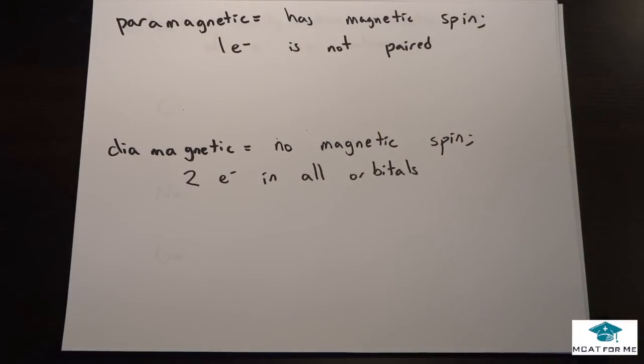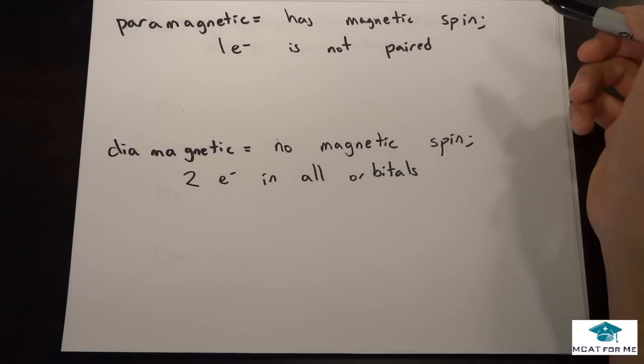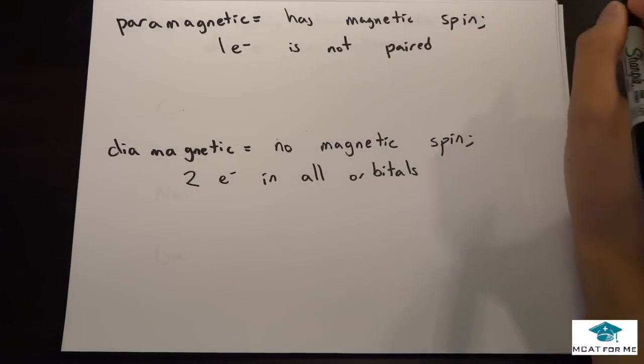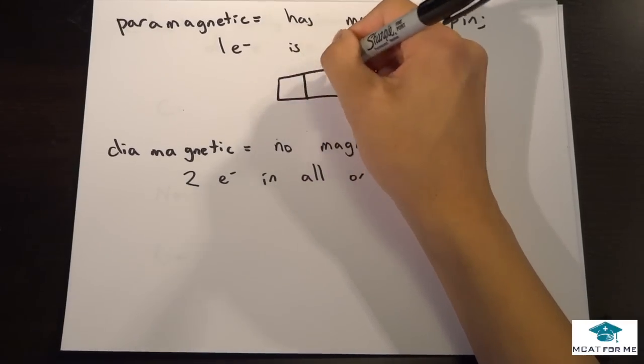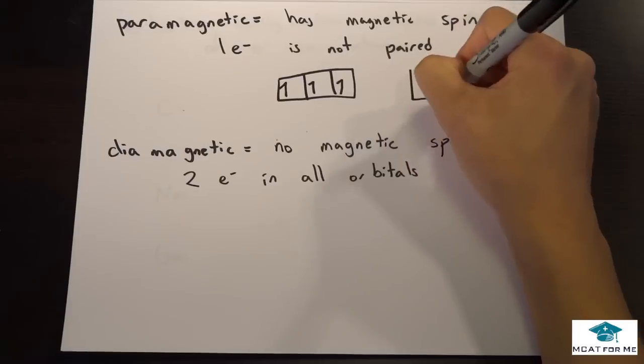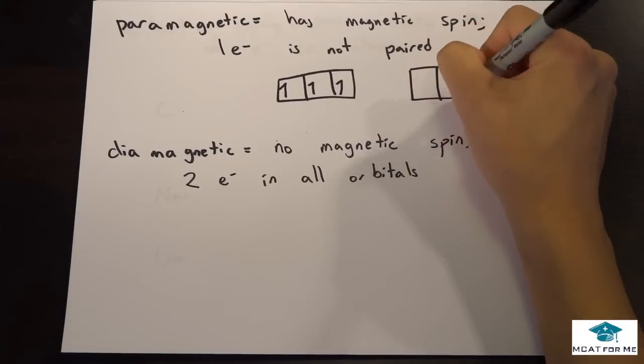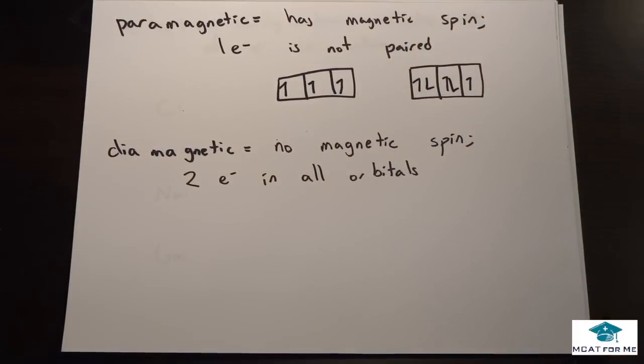So the next thing we're going to talk about is paramagnetic versus diamagnetic. We'll go over the definition first. So paramagnetic has a magnetic spin and it has at least one electron that is not paired. So for example, like this, this for sure would be paramagnetic. This as well would be paramagnetic.